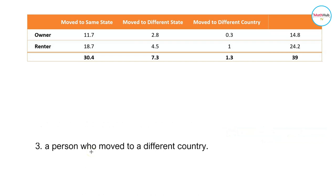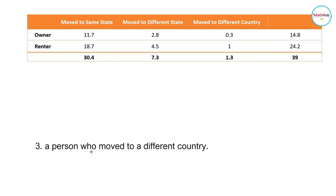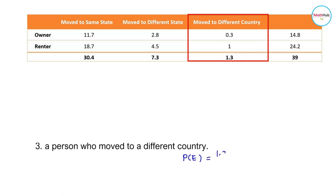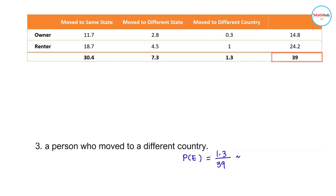Next, we want to compute the probability that a randomly selected American who moved was a person who moved to a different country. The favorable event is the total number of people who moved to a different country, which is 1.3 million. So this is 1.3 divided by the total number of Americans who moved, which is 39. 1.3 divided by 39 is approximately equal to 0.03.